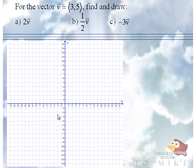For the vector, vector V, which has component form 3, 5, find and draw part A, 2 times vector V.